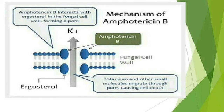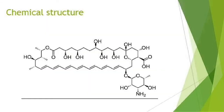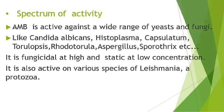Now let us study the chemical structure of amphotericin B. Amphotericin B comes under polyene antibiotics — 'polyene' meaning it contains several double bonds. Amphotericin B contains seven double bonds in its structure.